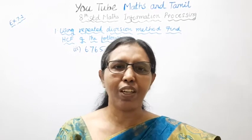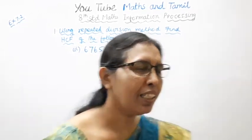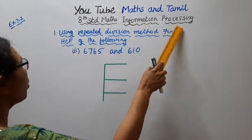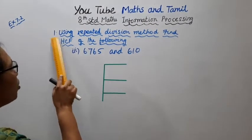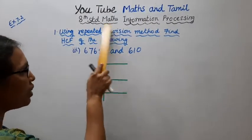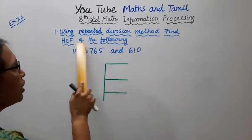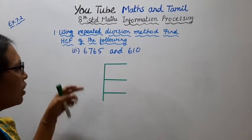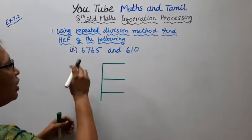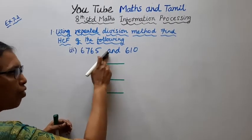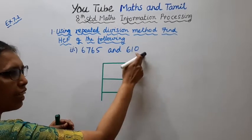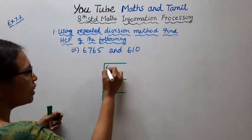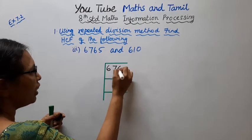Hello students, welcome to Max and Travel Channel. H10 Max - Information Processing Exercise 7.2: Using repeated division method, find the HCF of the following. First: find the HCF of 6765 and 610 using the repeated division method.